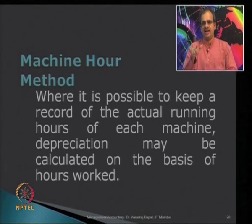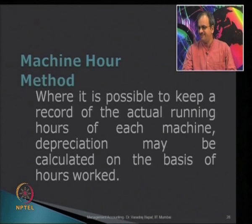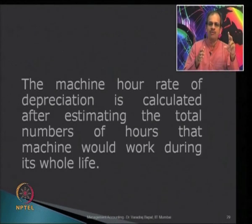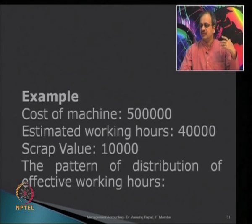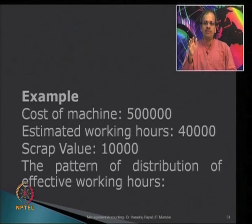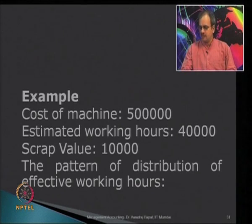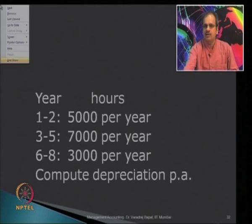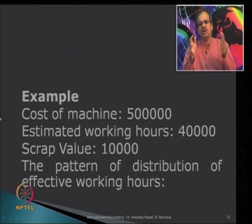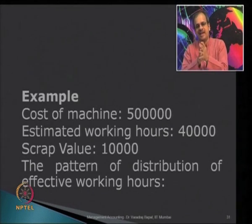The rate of depreciation is calculated by estimating the total number of hours the machine could be used throughout its life. For example, if the cost of the machine is 50,000, estimated hours are 40,000, and the scrap value is 10,000, an estimation is made as to the pattern of use. We have the total cost of 50,000 and we know the scrap value — can you calculate the depreciation per hour?